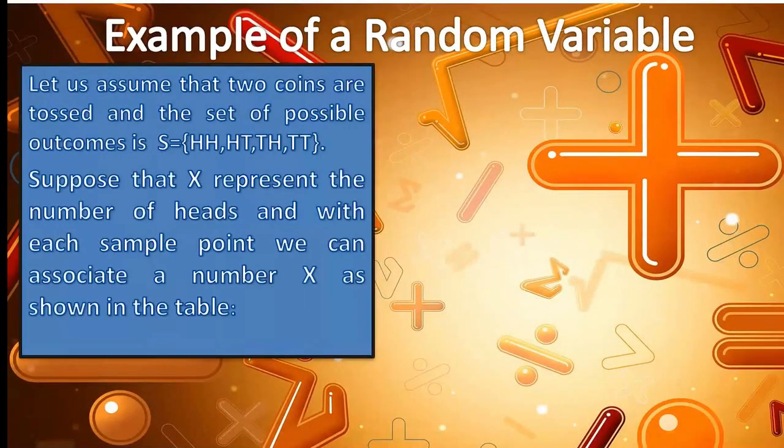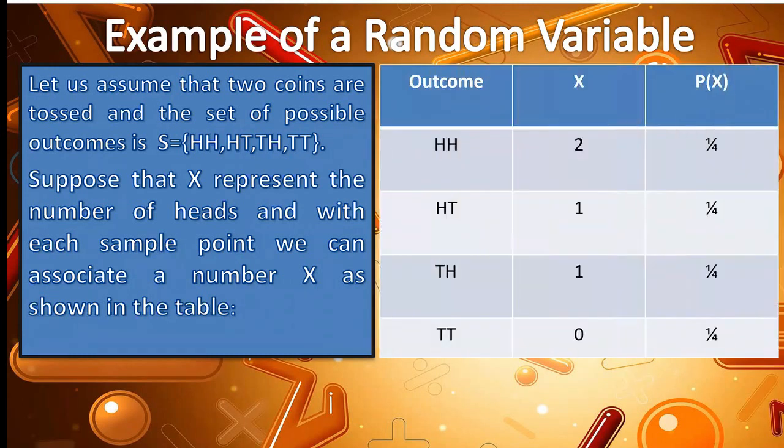Let us assume that two coins are tossed, and the set of possible outcomes is set S, equivalent to head-head, head-tail, tail-head, tail-tail. Suppose that X represents the number of heads, and with each sample point, we can associate a number X, as shown in the table. So, here's the table that shows the possible outcomes of tossing a coin. The first column shows the possible outcome. Second is X, which shows the number of heads on each outcome. And the last column is P(X), which shows the probability occurrence of each outcome.